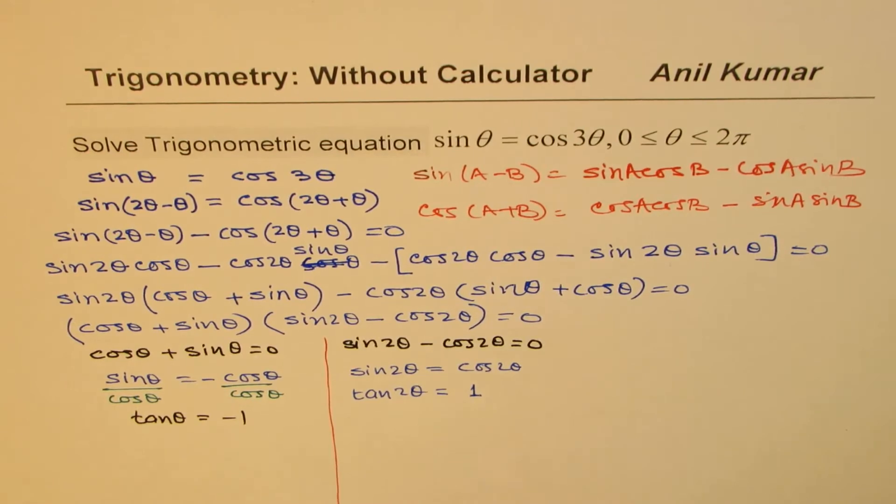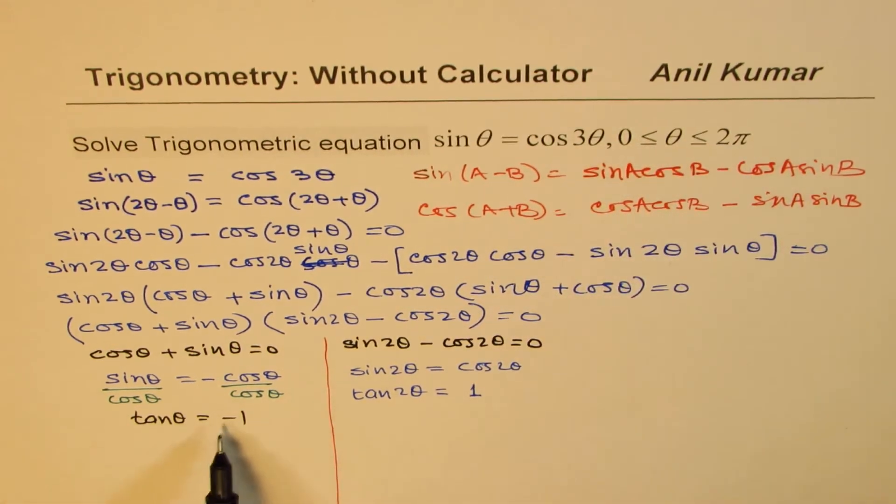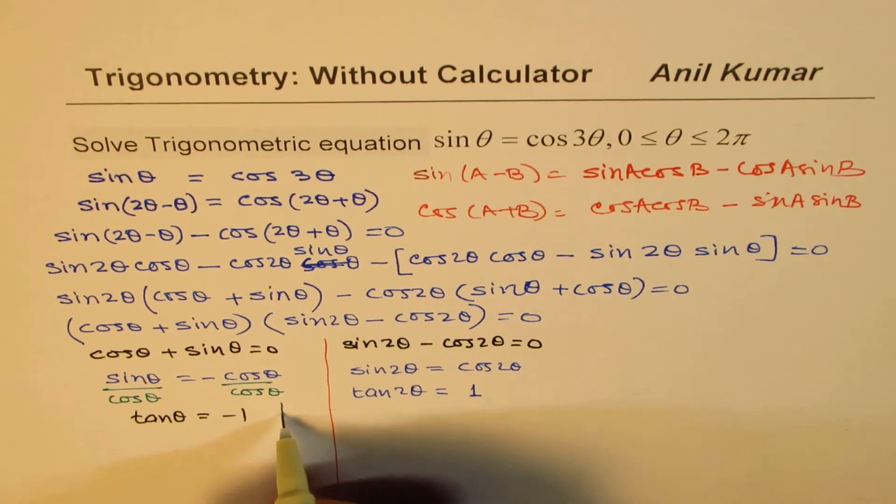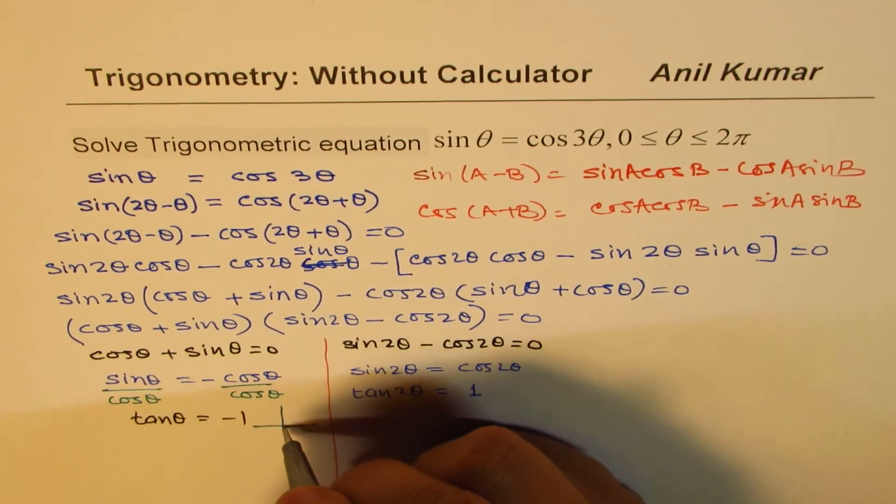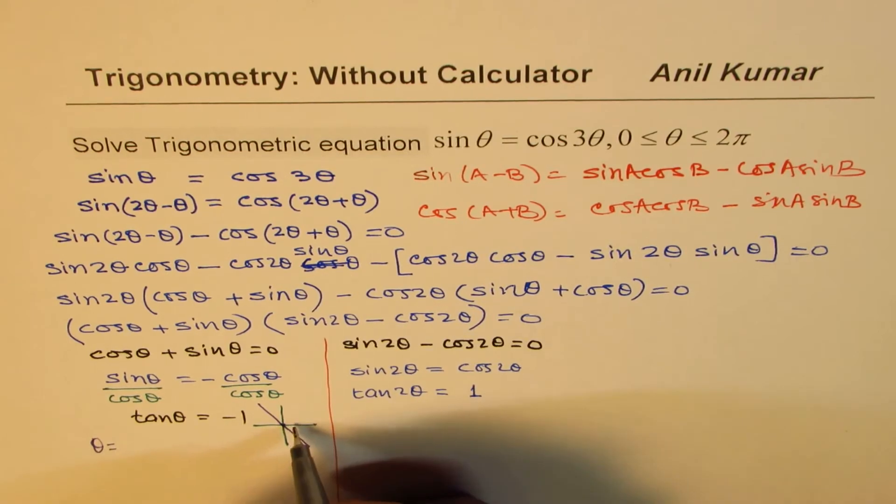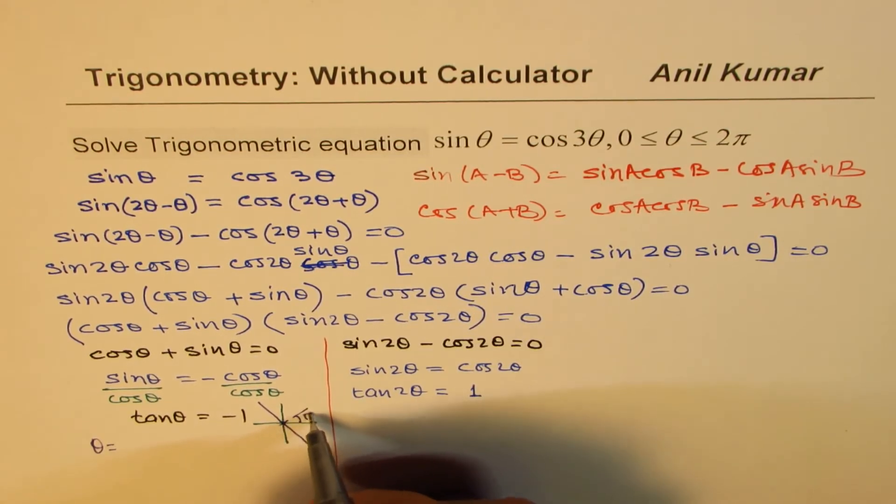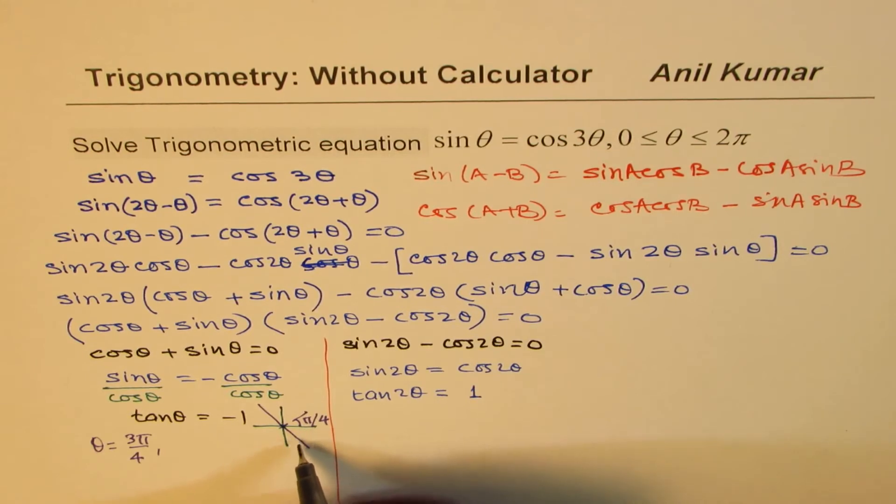So those are the answers for theta. Let's figure out what theta is when it is between 0 to 2 pi. If theta is between 0 to 2 pi, tan is negative for two values. It is negative when we are in quadrant 2 or in quadrant 4. So the value of theta will be, acute angle being pi by 4. So this angle is 3 pi by 4 and 7 pi by 4. So these are the two answers for theta.